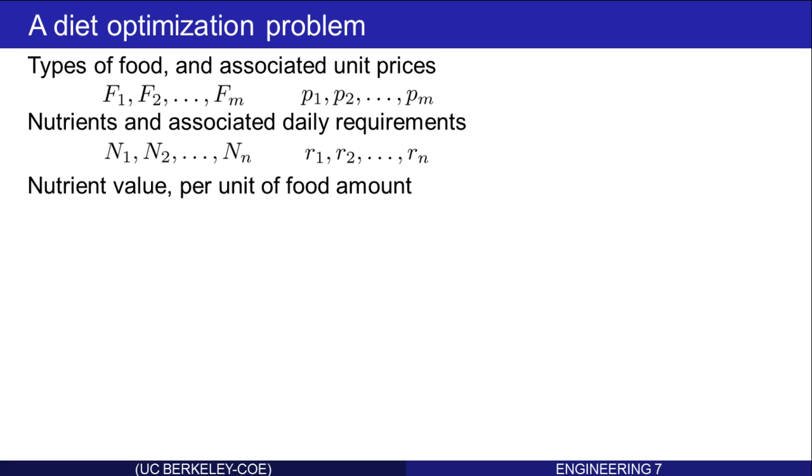Finally, there's the nutrient value per unit of food amount. We already saw this. Vij will be the amount of nutrient NI per unit amount of food Fj. So for instance, maybe 0.0042 dollars per gram of oatmeal. That's a price.